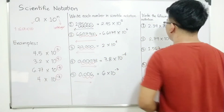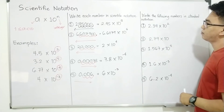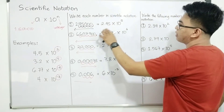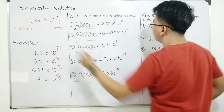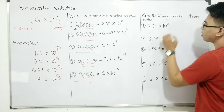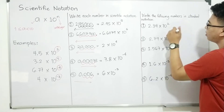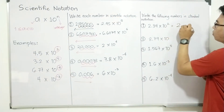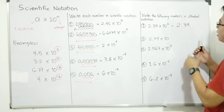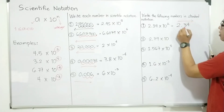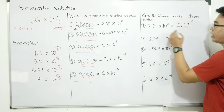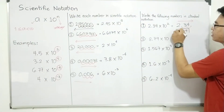Let's start with number 1. We are given 2.34 times 10 raised to 2. To undo this, since we moved from right to left to get scientific notation, now our movement is the opposite — from left to right. Since the exponent is 2, we move from this point 1 and 2 places to the right. The answer — the original number — is 234.